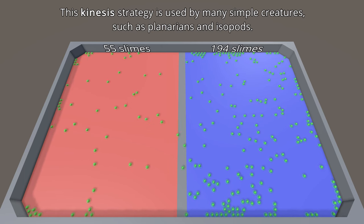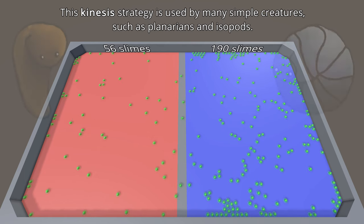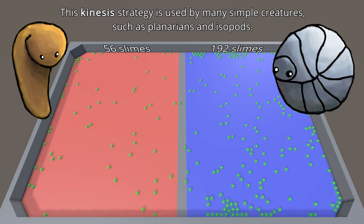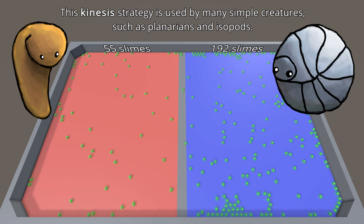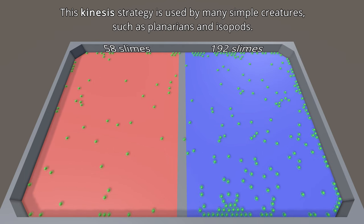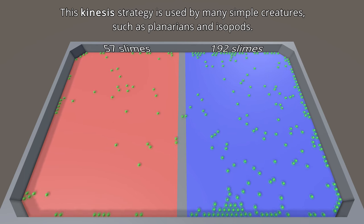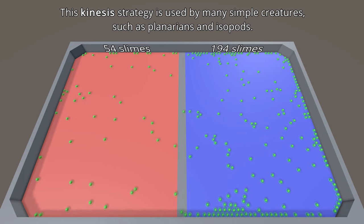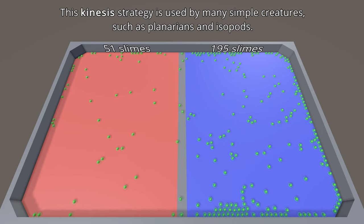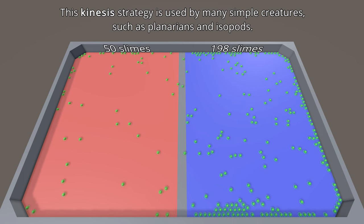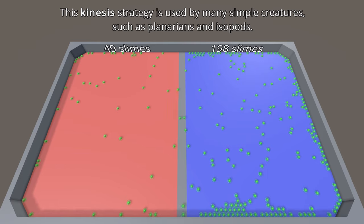In the real world, kinesis is a strategy that's used by a lot of simple organisms like planarians or roly-poly isopods. It's used by a lot of simple creatures to get them into a good place. Probably a lot of unicellular creatures, probably a lot of microscopic creatures, probably a lot of things that aren't actually animals can use kinesis. Kinesis is really useful for simple creatures because that's all they've got. That's the best they can do. But it can still be used by more complex creatures, too.